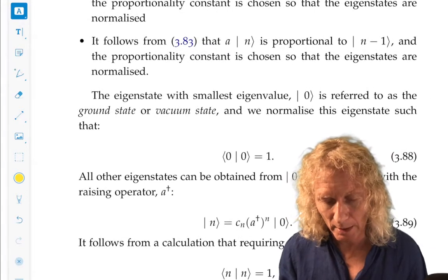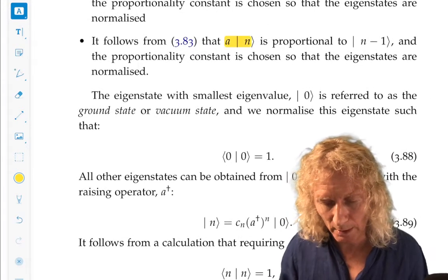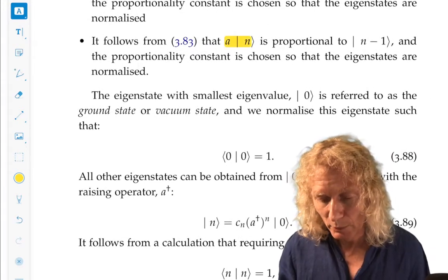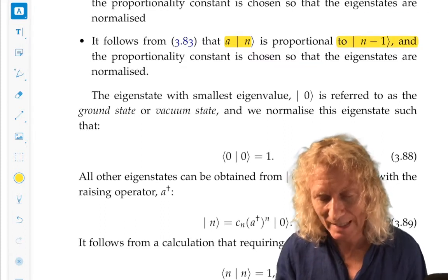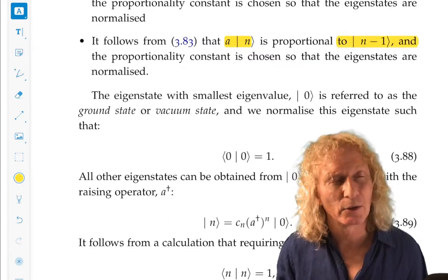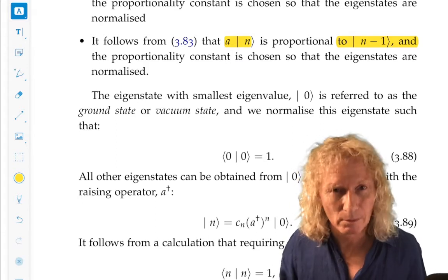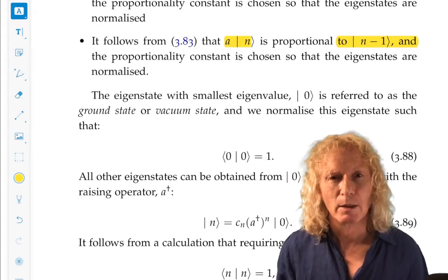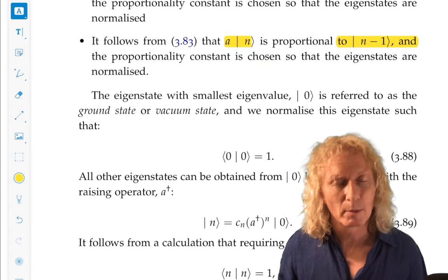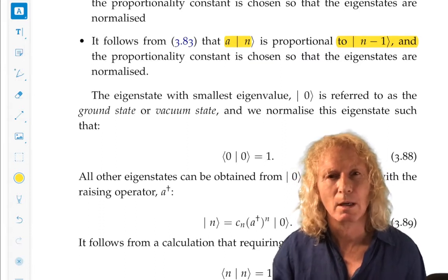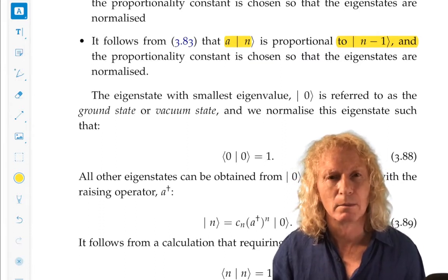All right. a acting on eta, we've shown in our calculations above. Similarly, it's proportional to ket n minus one. And so we deal with the proportionality constant by normalizing it, because we want all our eigenstates to have norm one.